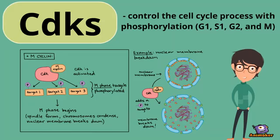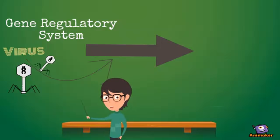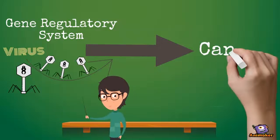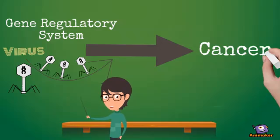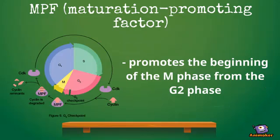If a virus infects the gene regulatory system, a mutation can occur in the form of cancer. MPF promotes the beginning of the M phase from the G2 phase by phosphorylating proteins needed during mitosis.